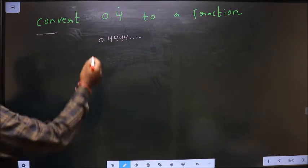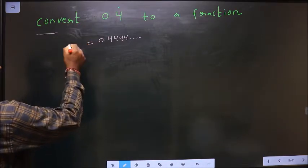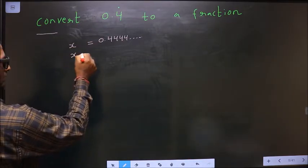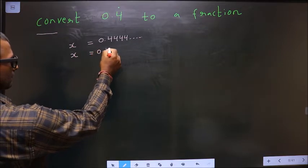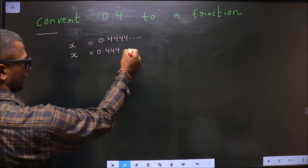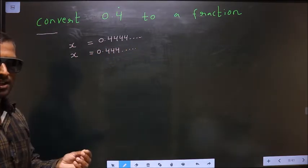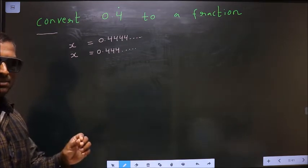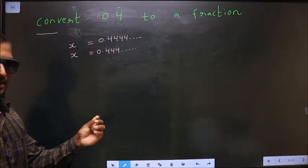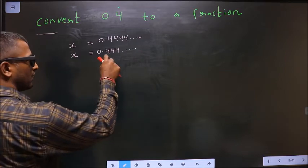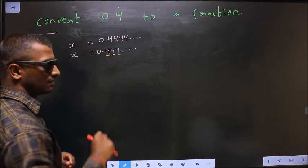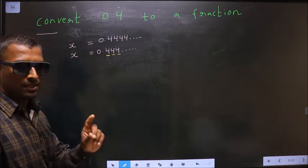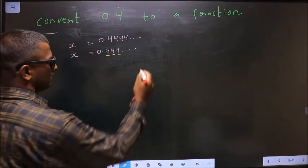Initially, whatever is given we take it to be x. Now you should check how many numbers are being repeated. In this case, only one number, 4, is being repeated.